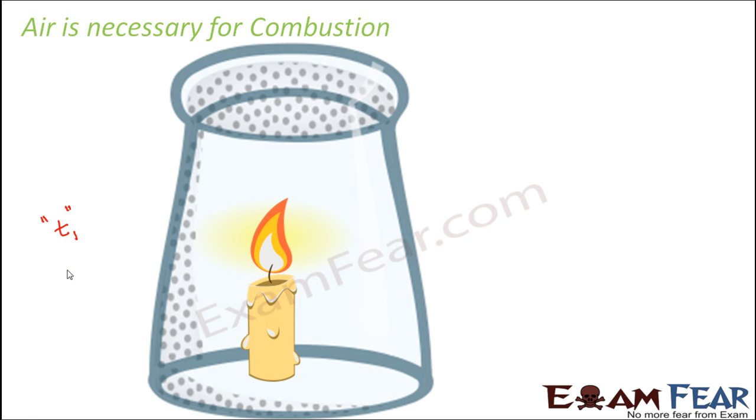Let us suppose this time is say t2 seconds. What you will observe here is this time, the time for which the candle was glowing before it goes off again. Obviously here also it will go off after some time because we have put a limitation. It can only utilize the air which is there inside this glass.